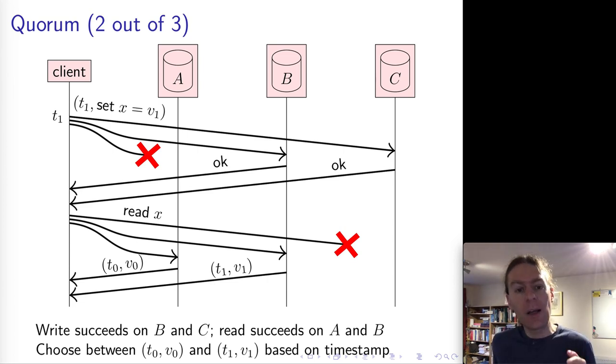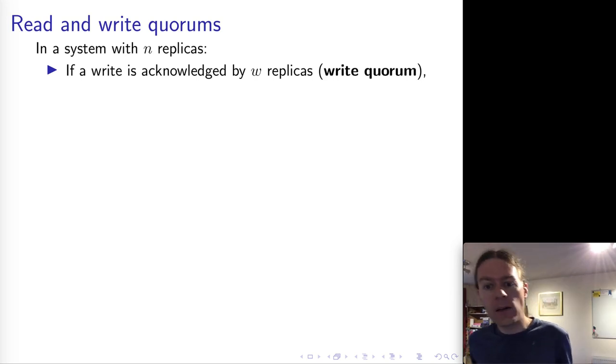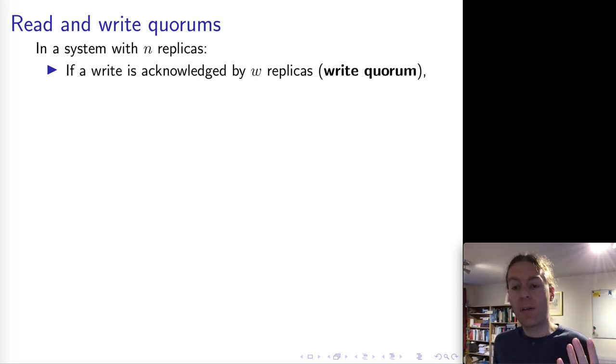So what do we have to do exactly to achieve this? We use quorums. And whenever you want to make a write to some number of replicas, the write will be considered successful as long as it has been acknowledged by at least W replicas. So this is our write quorum.